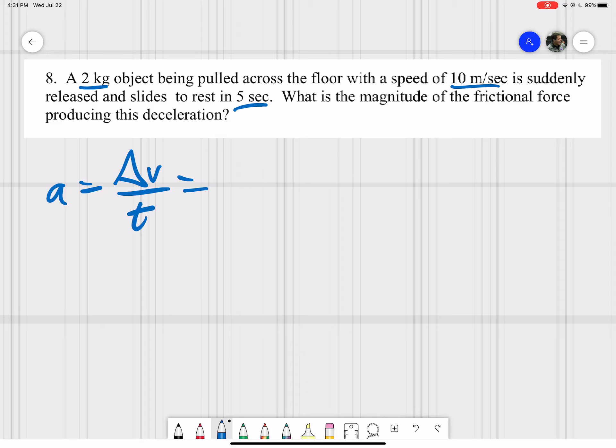Your velocity goes from 10 meters per second to rest. So your change in velocity is going to be 0 minus 10, as in V final minus V initial, divided by the time it took to make that change, which was 5 seconds.